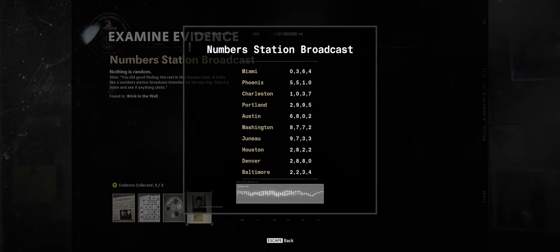So, having worked out that our code for this section is, what was it again, 28, 22, we come to the number station broadcast. We have a look at that evidence, and we look for 28, 22, which is Houston. So, Houston is going to be the first or second part of our code, depending on what order it asks us. We don't know this yet.